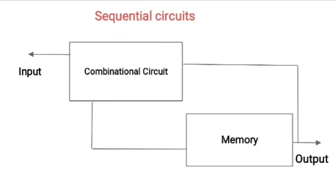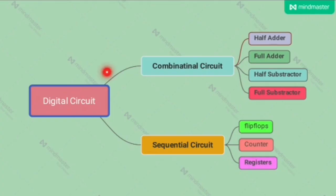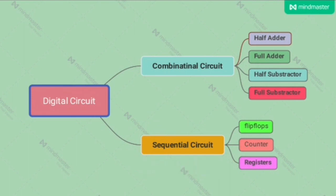So sequential circuit is the one which has memory, while combinational circuit does not have memory. The addition of the combinational circuit with memory is called as the sequential circuit. So logical circuits are divided in two parts: one is the combinational circuit and another is the sequential circuit. Examples of combinational circuit are half adder, half subtractor, and full subtractor. Examples of sequential circuit are flip-flops, counters, and registers.